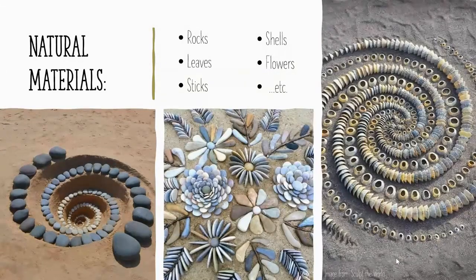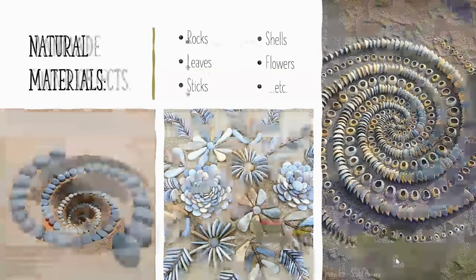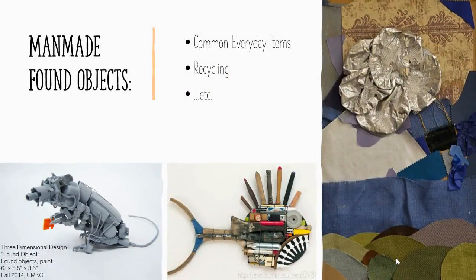In terms of the objects you could choose to use, you might decide to take advantage of natural materials — anything you could typically find outside: rocks, leaves, flowers, anything you can get your hands on from nature. Man-made found objects would also be a great choice. You could take advantage of common everyday items — rummage through your junk drawer, see what you have access to. Just remember, if you're using household items, make sure you have permission to use them.